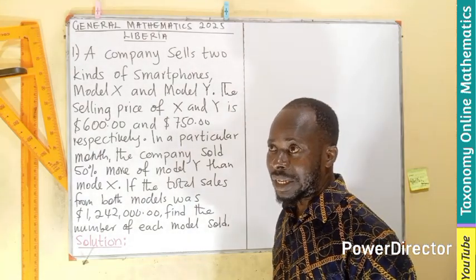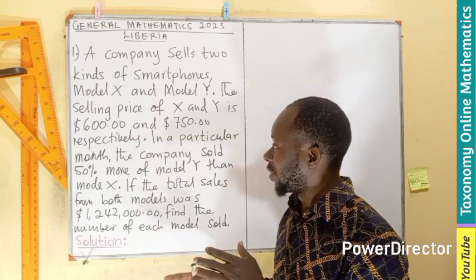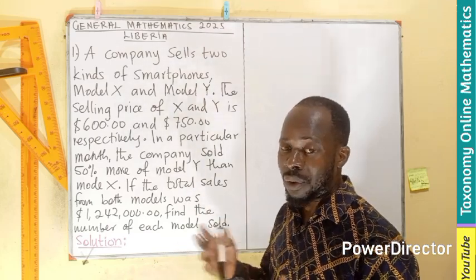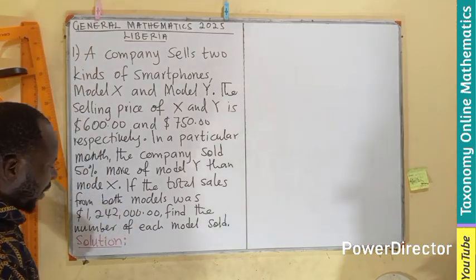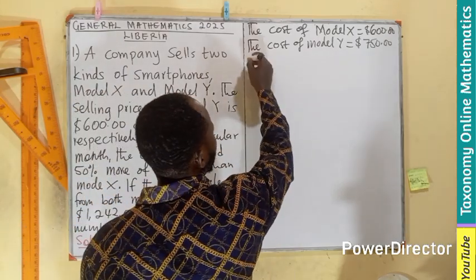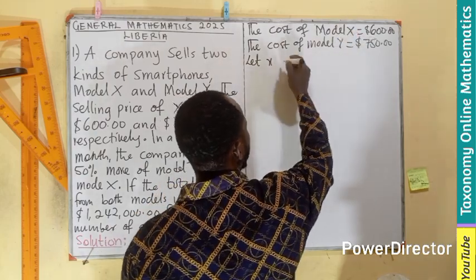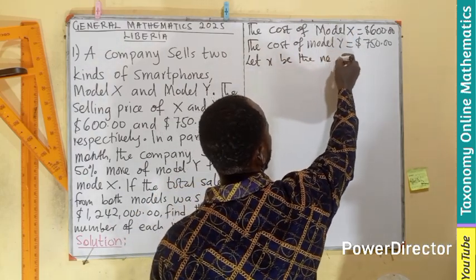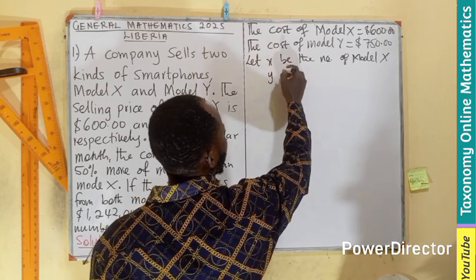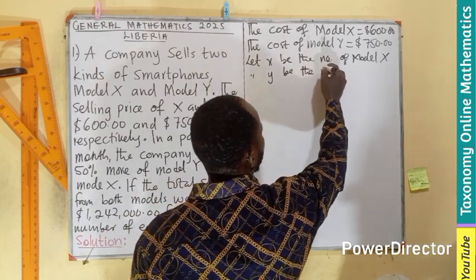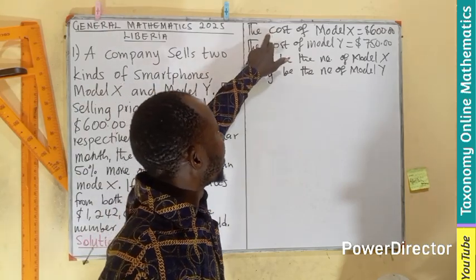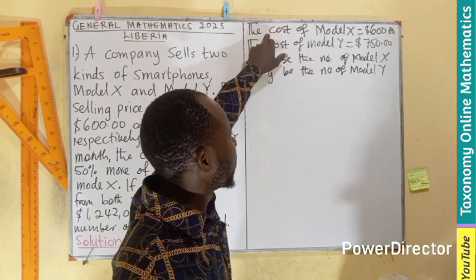We need to find how many units have been sold. Let x (small x) be the number of model X sold, and y be the number of model Y sold. The unit cost has been given to us — $600 for model X and $750 for model Y.